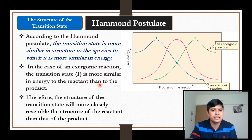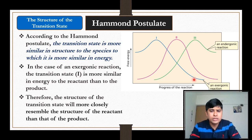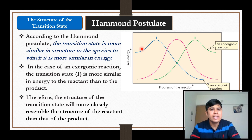In the case of an exergonic reaction — shown by the blue curve — reactants have more energy than products, so products are more stable. In an exergonic reaction, the transition state is more similar in energy to the reactant side than to the product. Therefore, the structure of the transition state will be more like the reactant in an exergonic reaction.